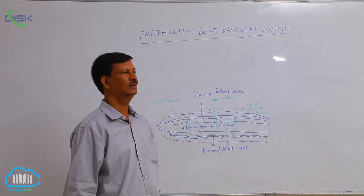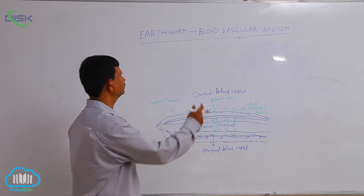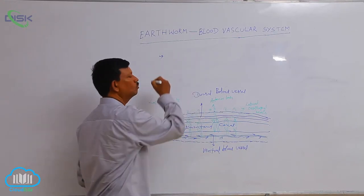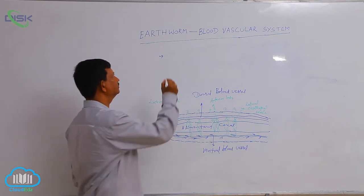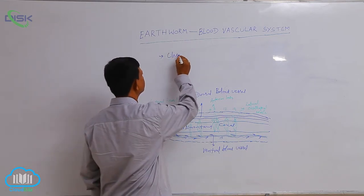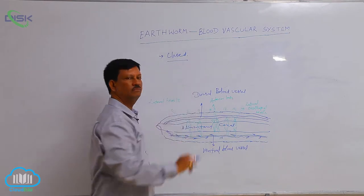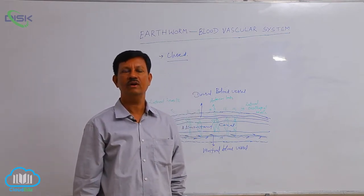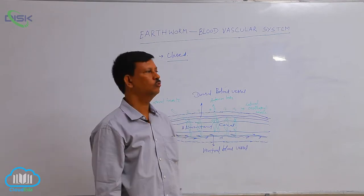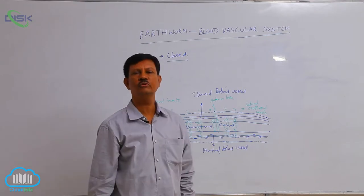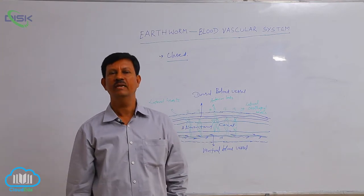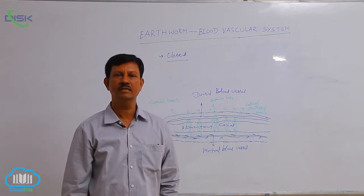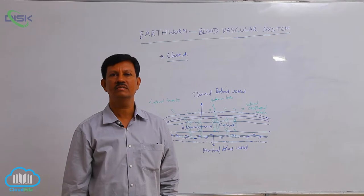The blood vascular system of earthworm is a closed blood vascular system. The circulatory system is first found in the phylum Annelida. In animals, there are two types of blood vascular systems: closed blood vascular system and open blood vascular system.